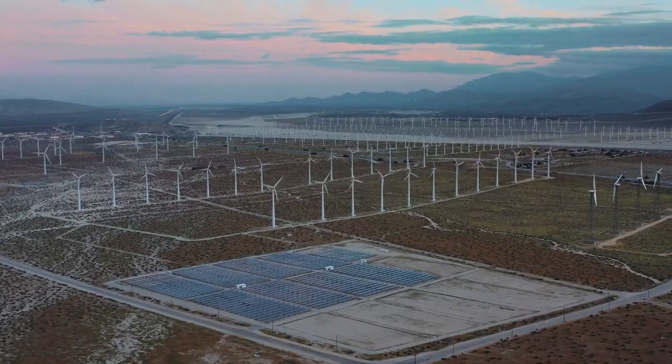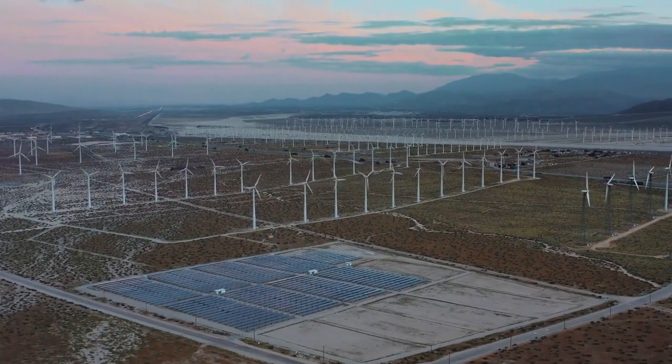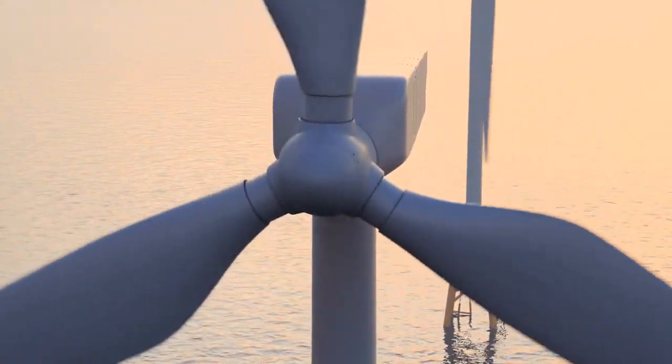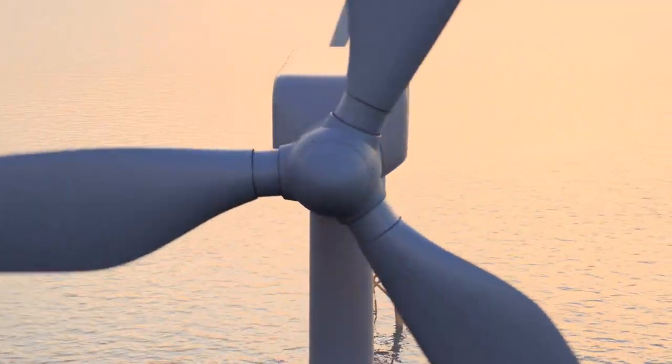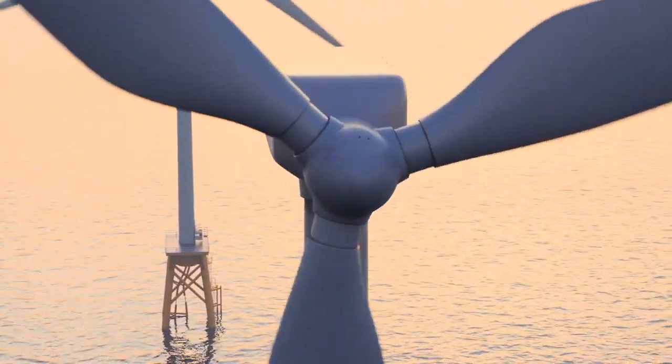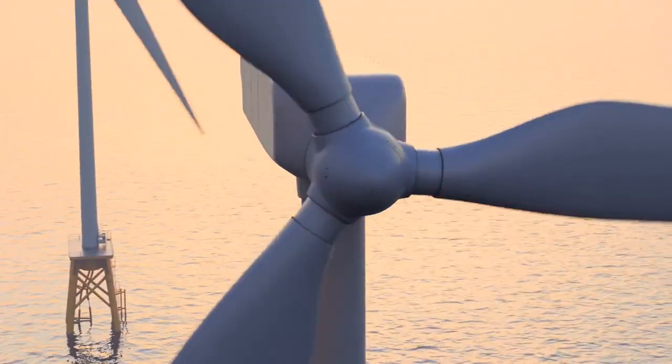In a hybrid system, solar panels and wind turbines work together seamlessly. The electricity generated by both sources is often fed into a common inverter, which converts the DC electricity to alternating current (AC) for use in homes and businesses.